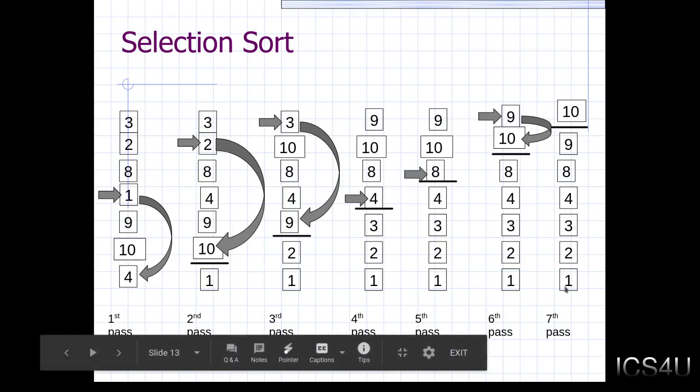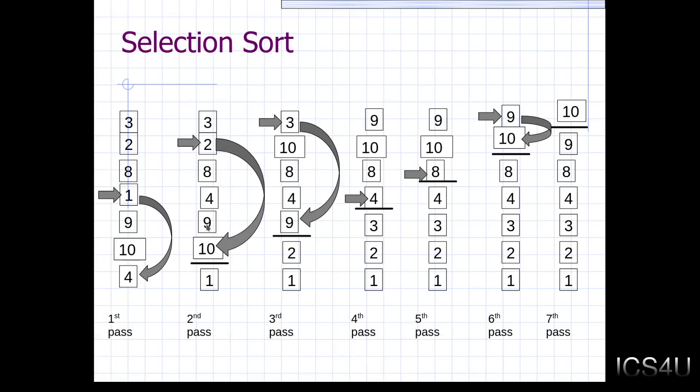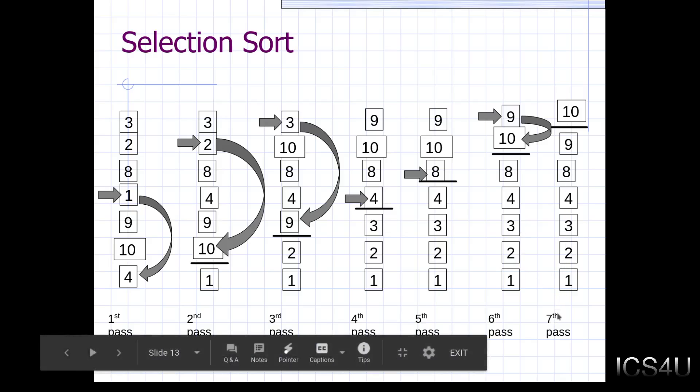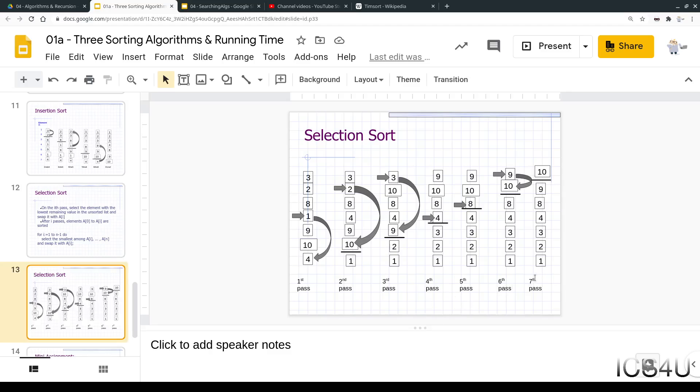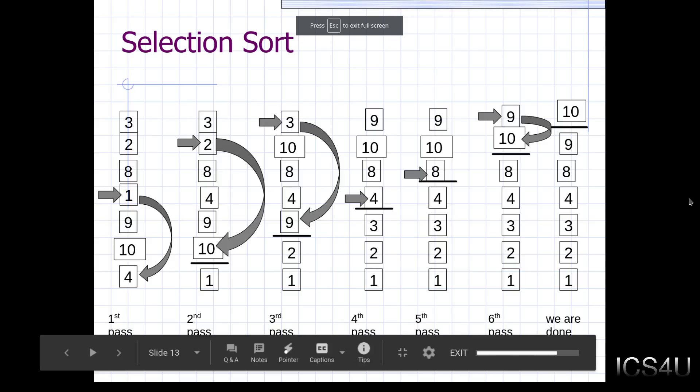So once again, this is an n minus one pass algorithm, meaning that if there's one, two, three, four, five, six, seven values, we have one, two, three, four, five, six. So the first one, one, two, three, four, five, six, seven. Well, in the seventh, there is no seventh pass. As you can see where it says seventh pass, there's nothing going on here. It's just the end. So maybe what I want to do in this slide is just put we are done, because there really isn't a seventh pass. We are done. Okay, so that's fixed up. So six passes for seven values. Again, n minus one for n.